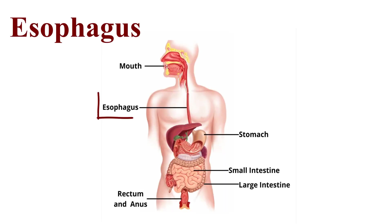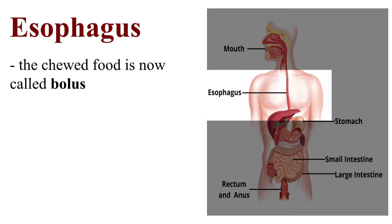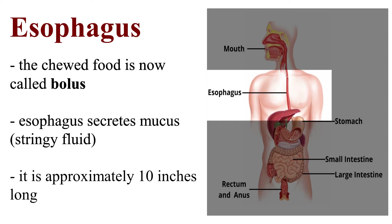The Esophagus is where food travels through peristalsis, going to the stomach. Peristalsis is the rhythmic and wave-like contractions of the esophagus. The chewed food is now called bolus. The esophagus secretes mucus and is approximately 10 inches long.